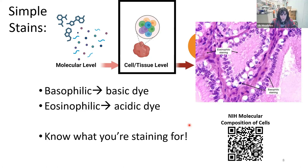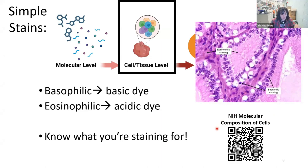If you're trying to look at nuclear detail, you'll want to use a basic dye like hematoxylin. If you're targeting cytoplasmic features, you'll want an acidic dye. There's a QR code linking to an NIH online textbook about molecular compositions of cells — really important to read if you're trying to assess what is the best stain to use when studying your tissues.